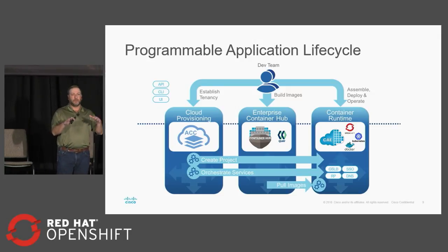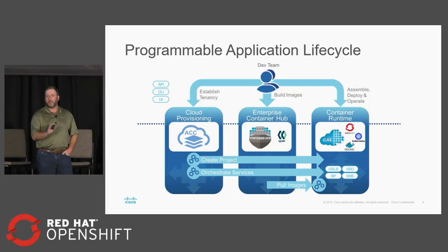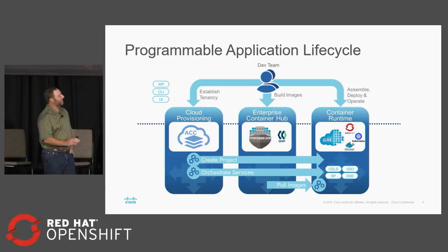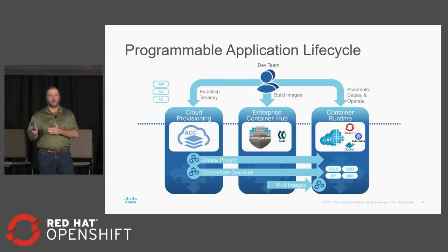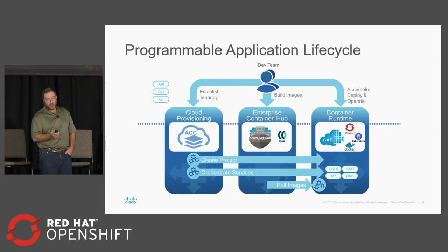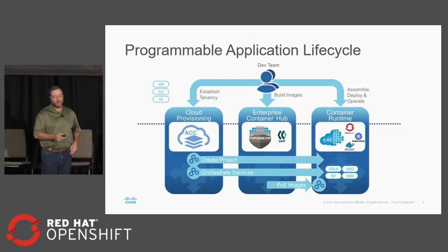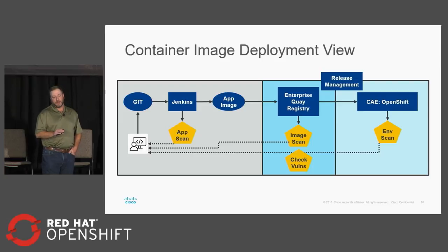Putting this back into larger context, what we're trying to provide is a programmable lifecycle for our application developers from end to end. Our developers at Cisco are able to establish their tenancy through a programmable API, provision their OpenShift projects, and manage their continuous integration and continuous delivery pipelines — all programmatically in a cloud-native fashion. Quay and our Enterprise Container Hub sit right there in the middle. Once you're provisioned and ready to start developing, you've got to start building containers and have a place to store them, and Quay is our spot for doing that.